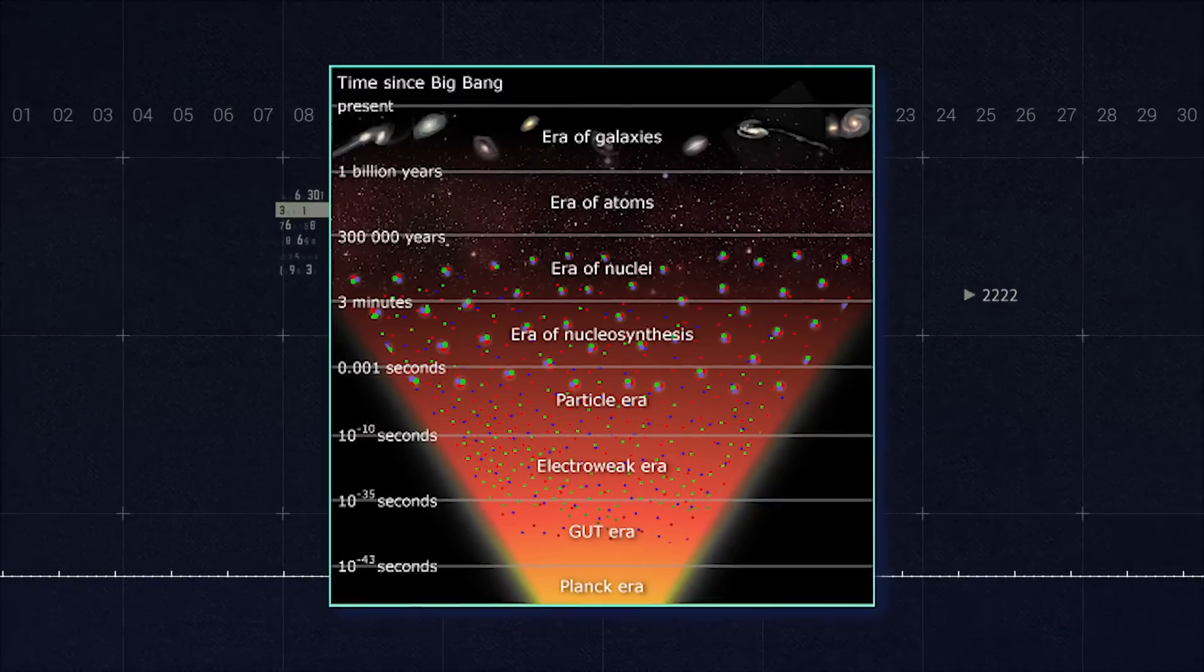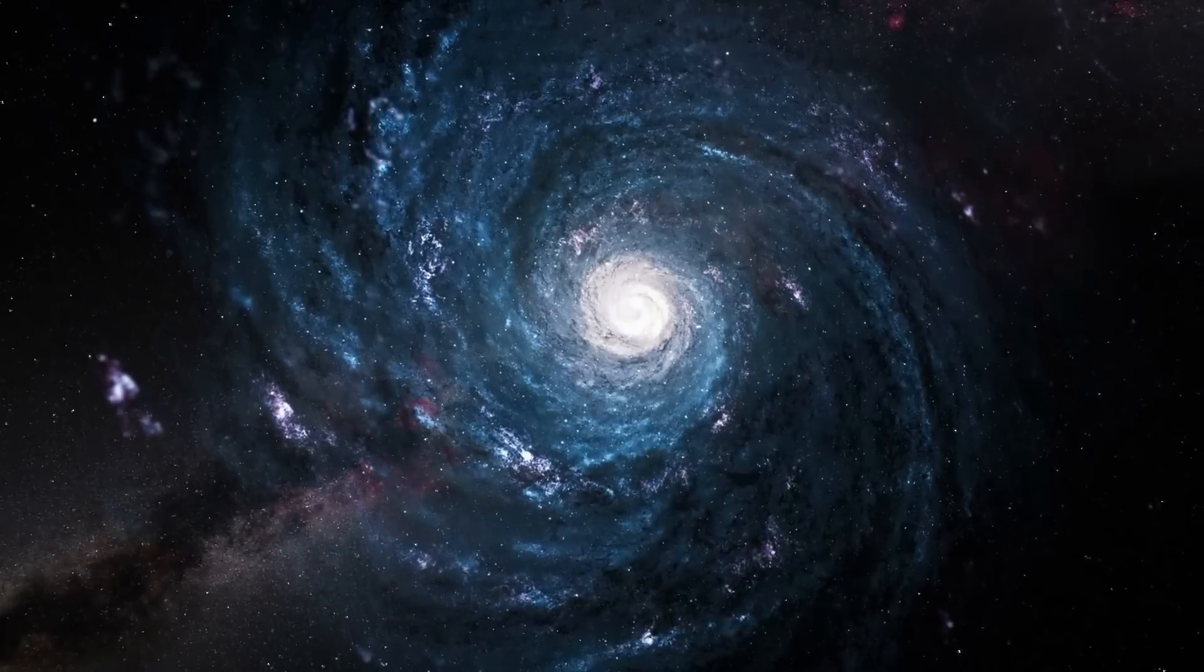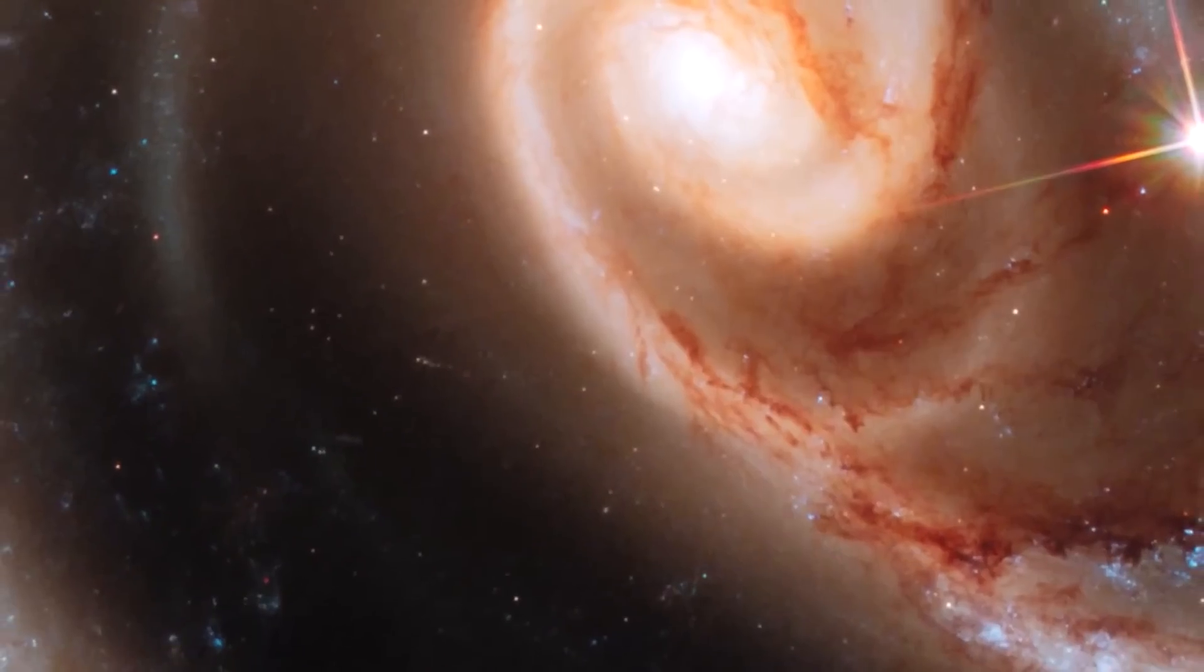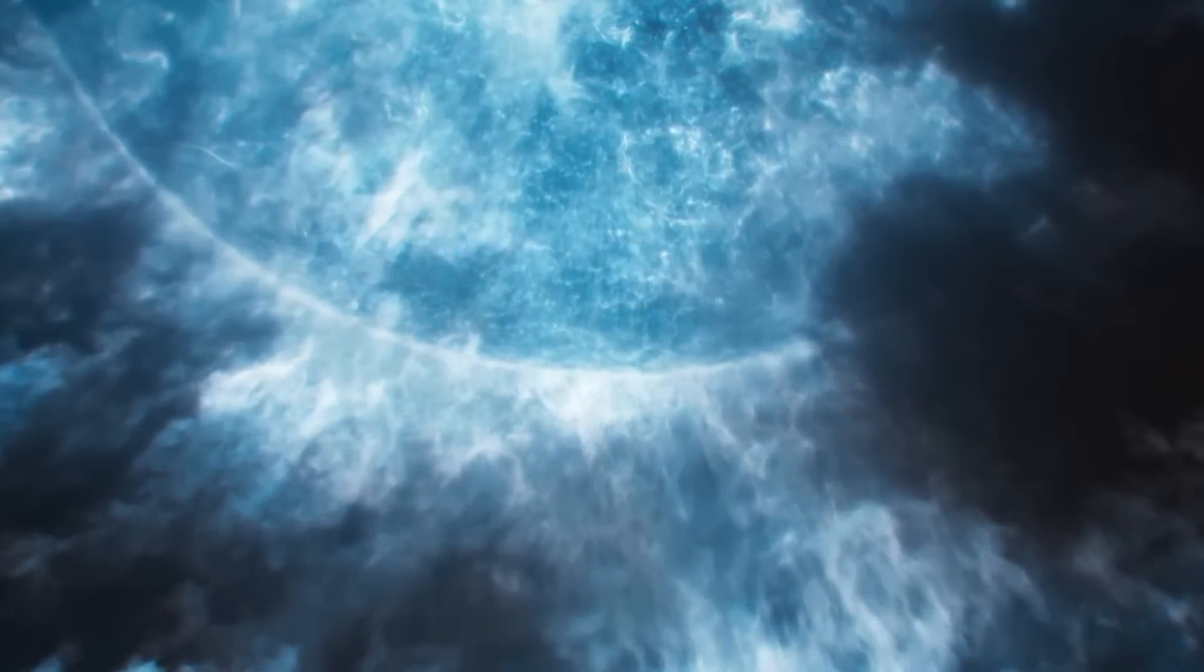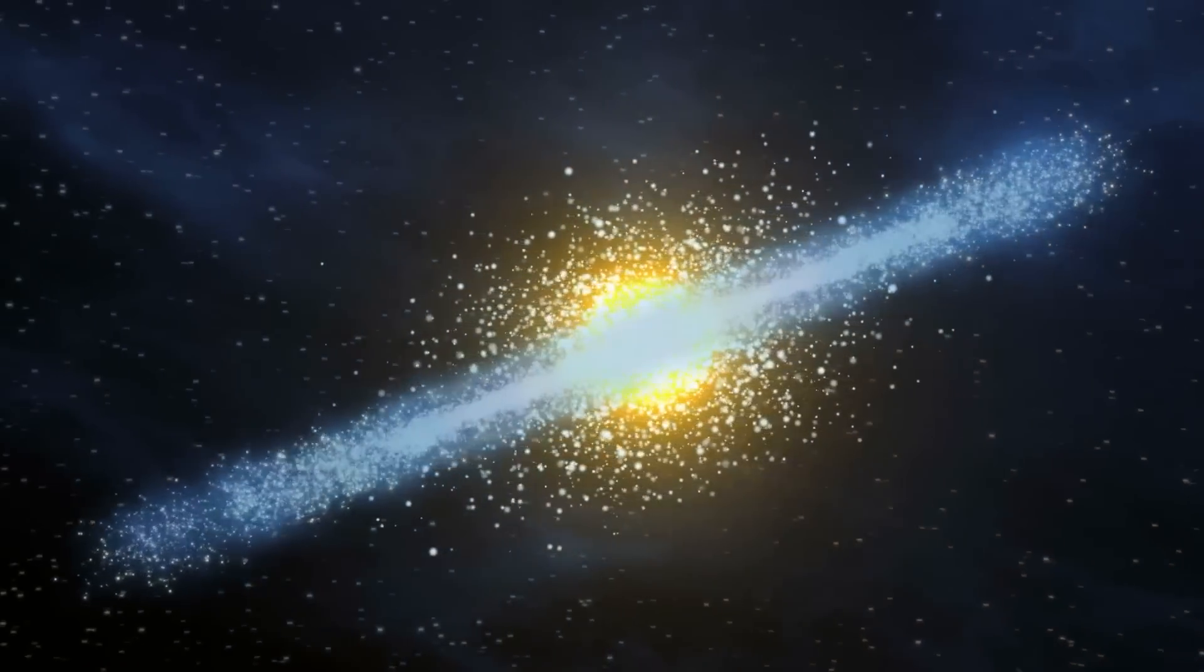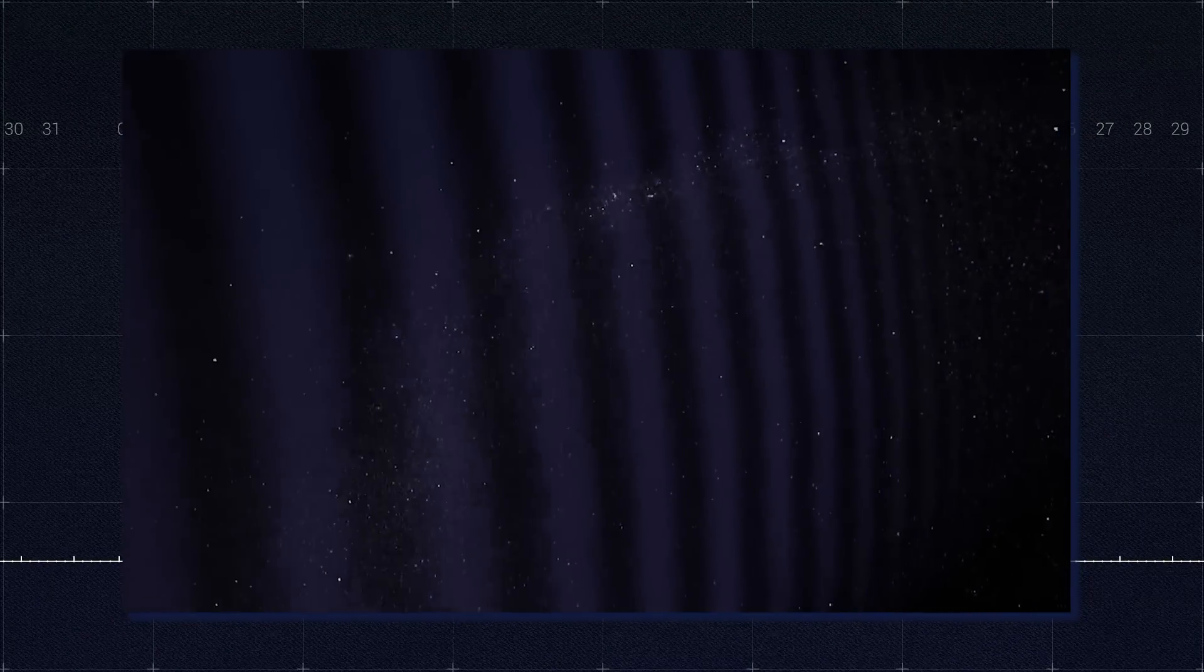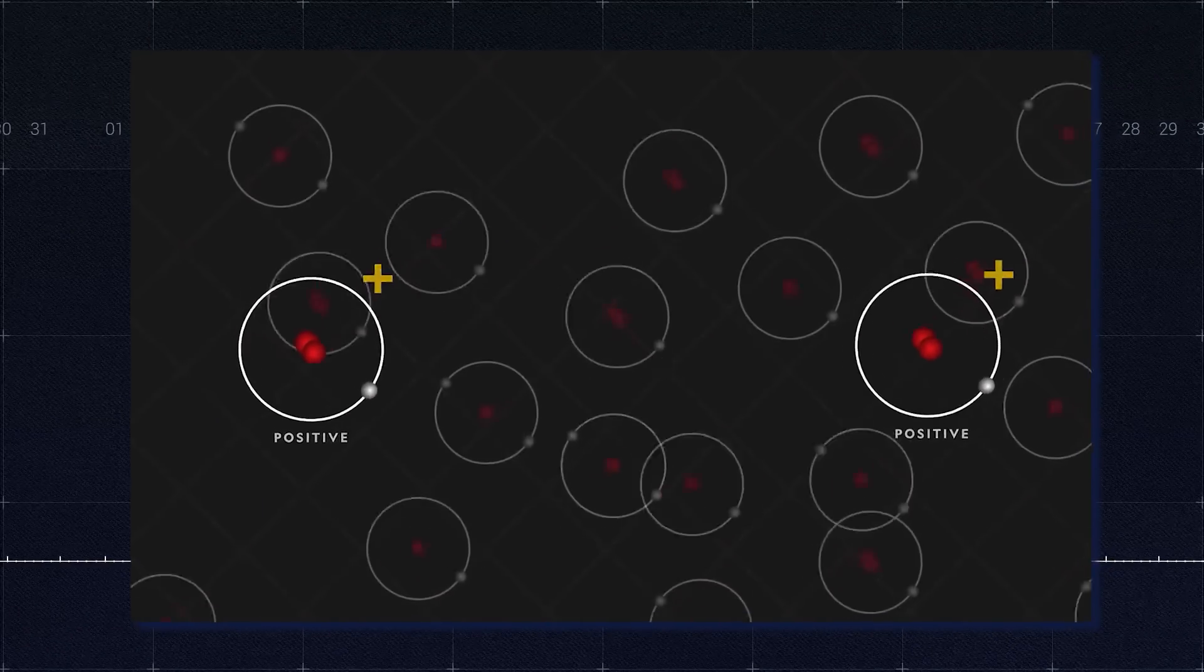From approximately ten raised to the power of negative forty-three seconds to ten raised to the power of negative thirty-six, the universe began to cross transition temperatures. It is here that the fundamental forces that govern the universe are believed to have started separating from each other. The first step in this was the force of gravitation separating from gauge forces, which account for strong and weak nuclear forces and electromagnetism. Then, from ten raised to the power of negative thirty-six to ten raised to the power of negative thirty-two seconds after the Big Bang, the temperature of the universe was low enough, at ten to the twenty-eight Kelvin, that the forces of electromagnetism or strong force and weak nuclear forces or weak interaction were able to separate as well, forming two distinct forces.